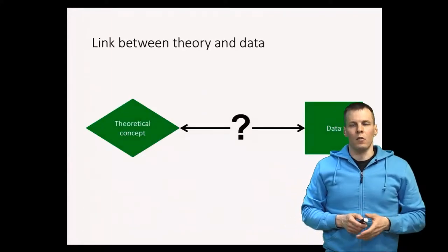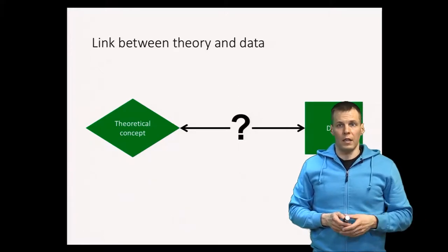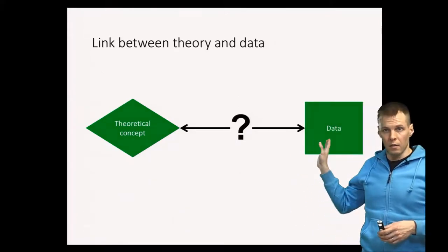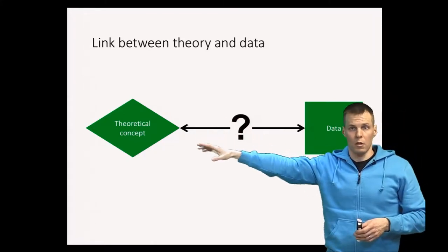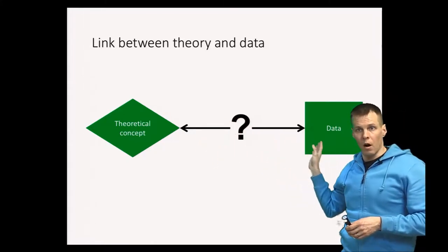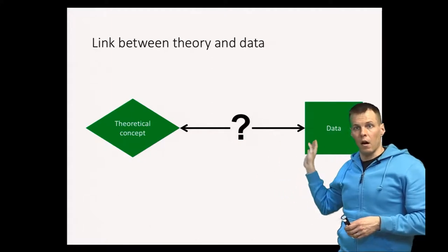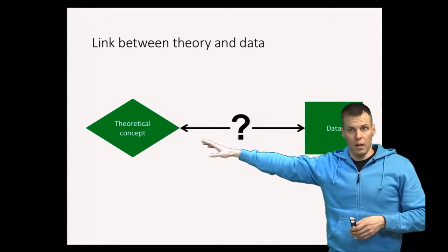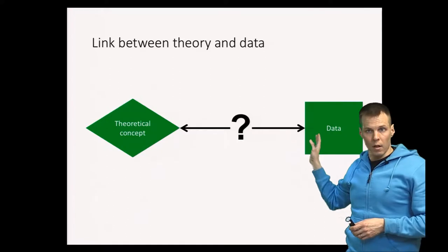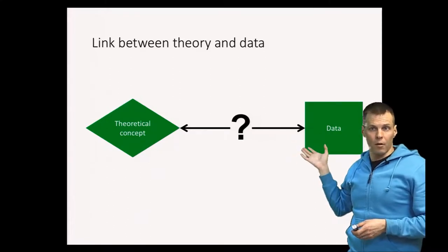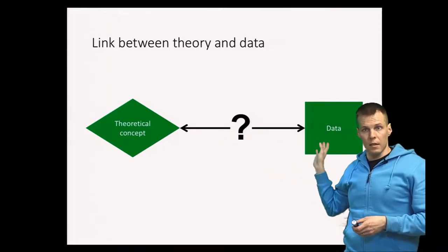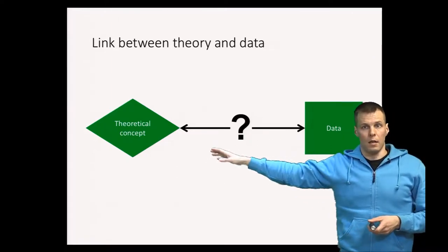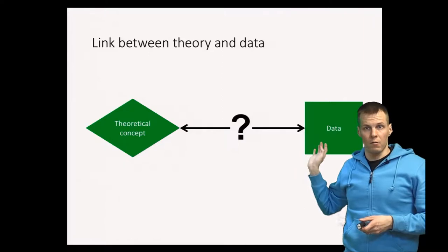The idea of the link between theory and data is that our data is something that we observe, and far from the data is the theoretical concept. We have to somehow argue that the data are related to the theory. If the data are unrelated to the theory, then we cannot claim that the data would allow us to test the theory. So what exactly is the nature of this link is something that your study needs to address.